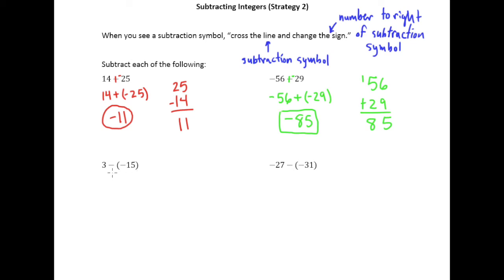Alright, now down here we're going to still do cross the line, change the sign. But the process will look just slightly different. This is a subtraction symbol here, but this is a negative indicating a negative 15. So the cross the line happens here. Cross the line and then change the sign of negative 15.